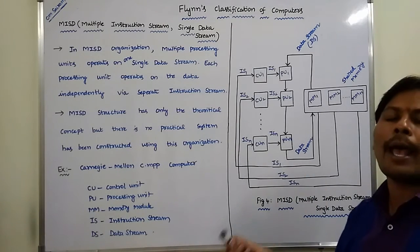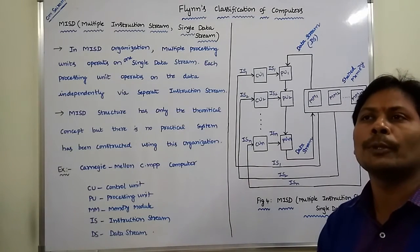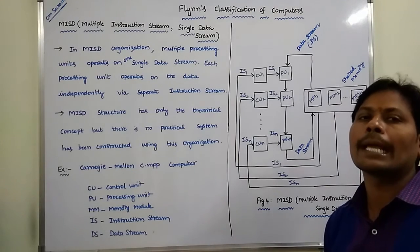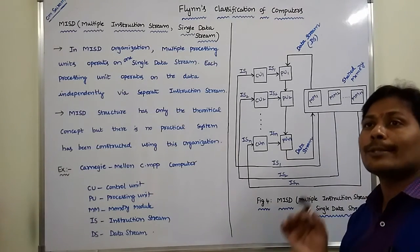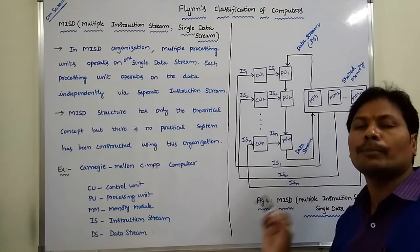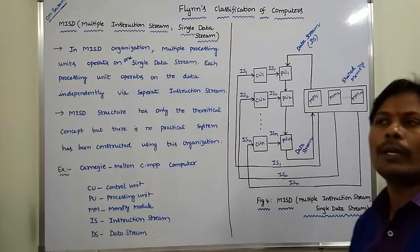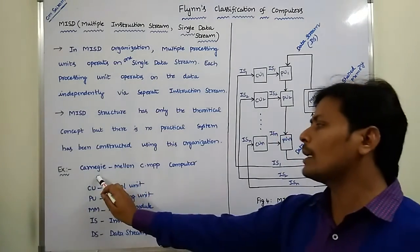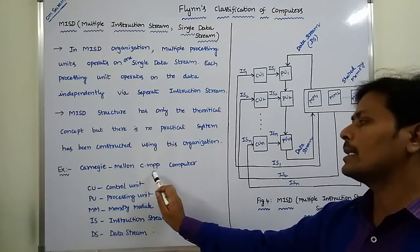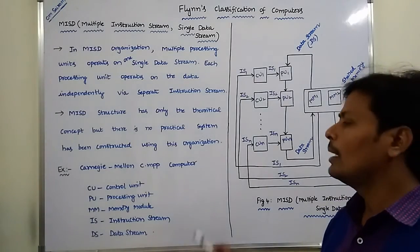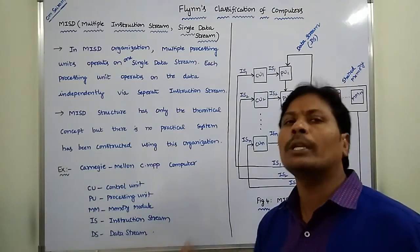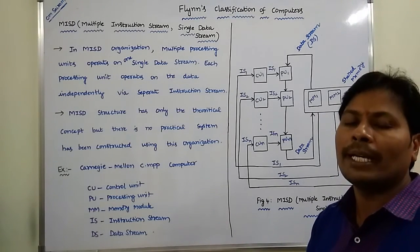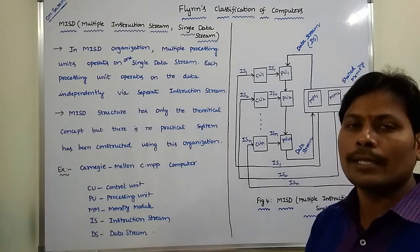The MISD computer has only a theoretical concept — there is no practical implementation. Up to now, no computer has the MISD architecture. An example often cited for MISD is the Carnegie Mellon C.mpp computer, but it only has a theoretical concept; there is no actual implementation of the MISD architecture.